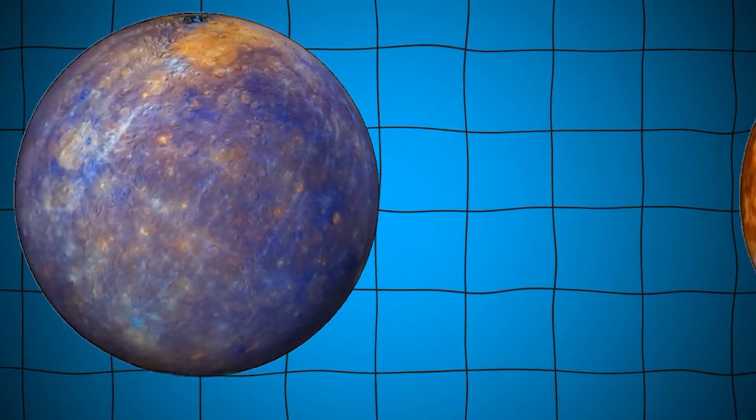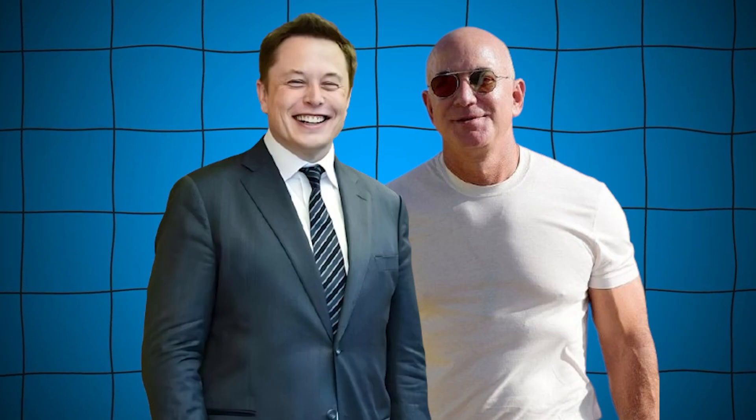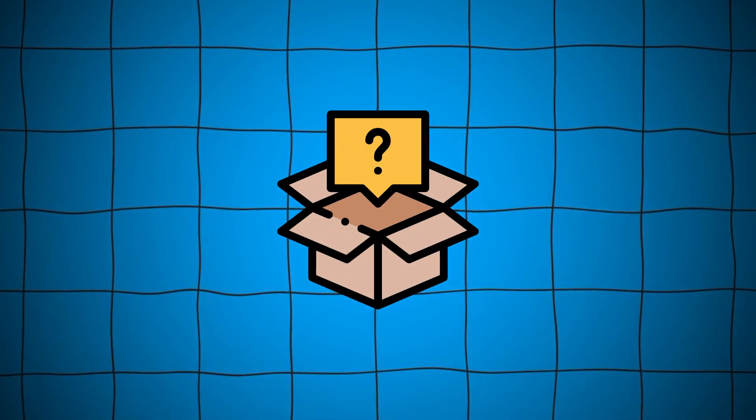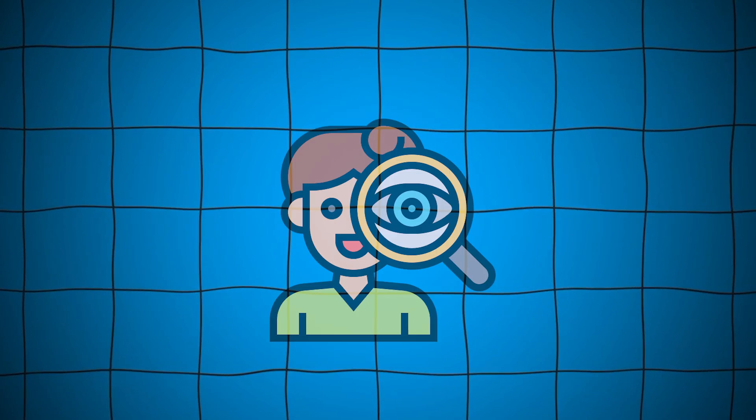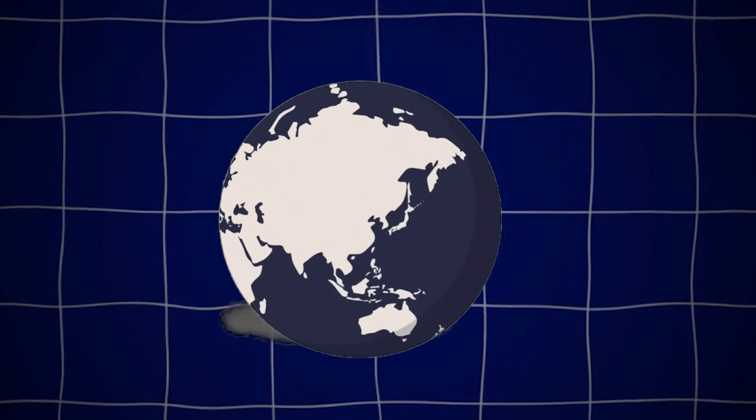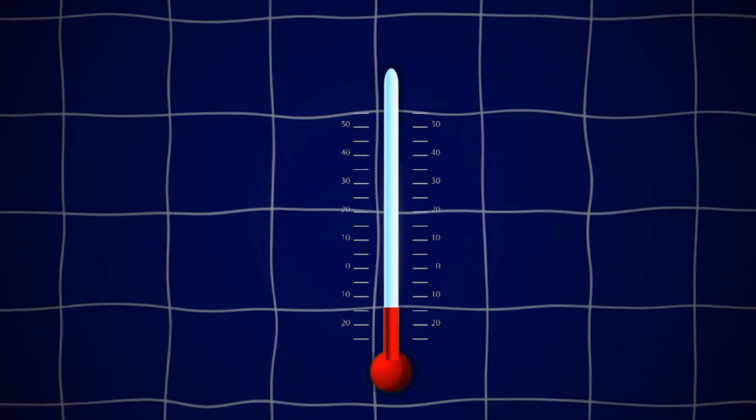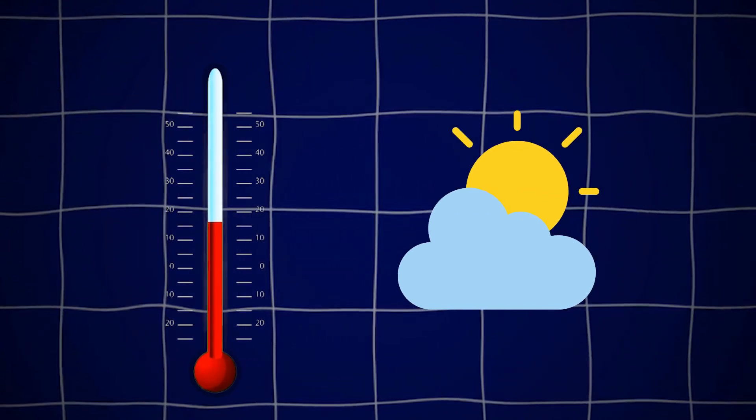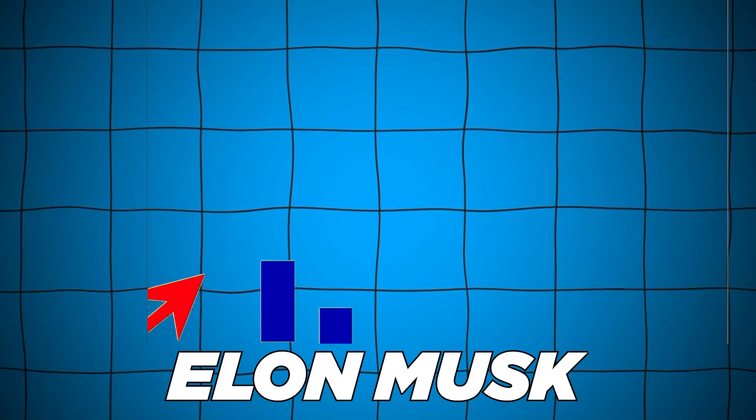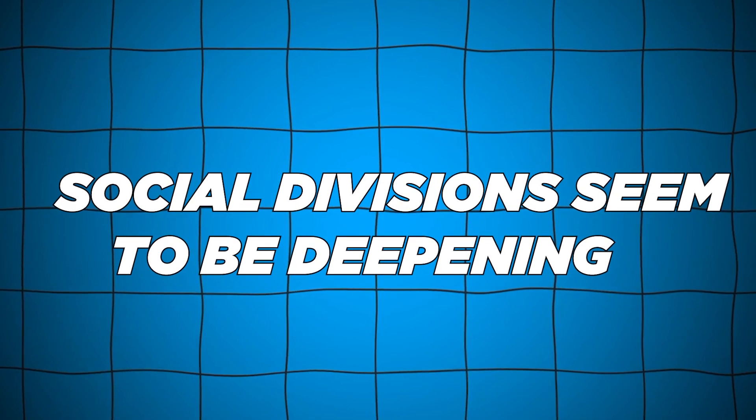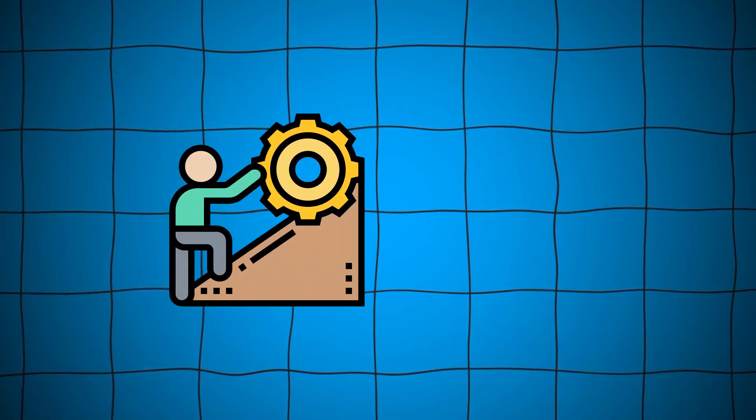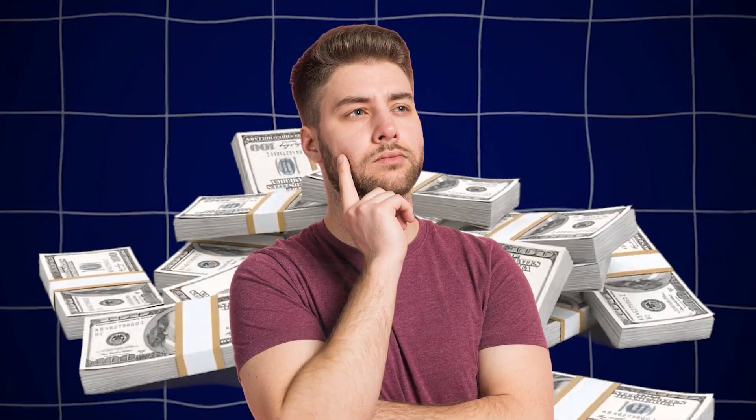Space has become less about exploration and more about escape. Billionaires like Jeff Bezos and Elon Musk aren't just looking to uncover mysteries or reach new frontiers. They're looking for a way out. Earth, as it stands, is facing a variety of challenges that make its future uncertain. Climate change is accelerating, with rising temperatures and extreme weather events threatening ecosystems and human lives. Political instability is on the rise, and social divisions seem to be deepening. For the wealthiest individuals, these challenges don't just pose risks to the planet, they represent existential threats. So while the rest of us might be focused on surviving on Earth, billionaires are already thinking about how to survive beyond it.